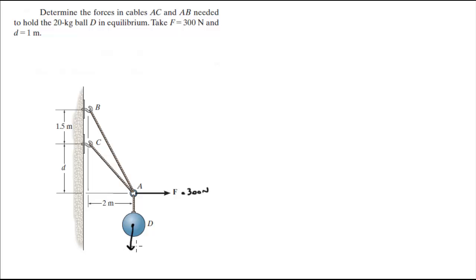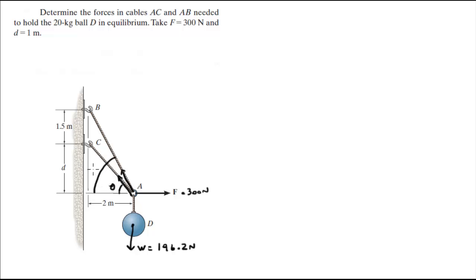You have a weight equal to the mass times the acceleration of gravity, which comes out to be 196.2N. You have a tension at AB and a tension at AC, and two angles. This angle I'm going to call beta, and the angle that AB forms I'm going to call alpha.